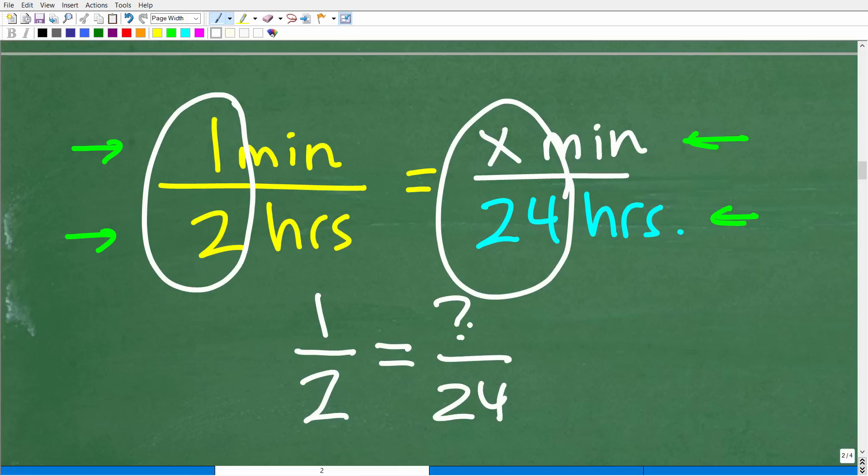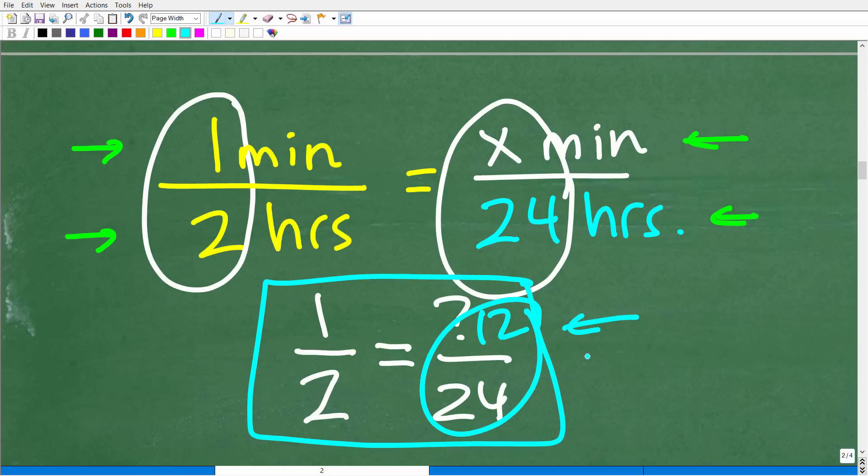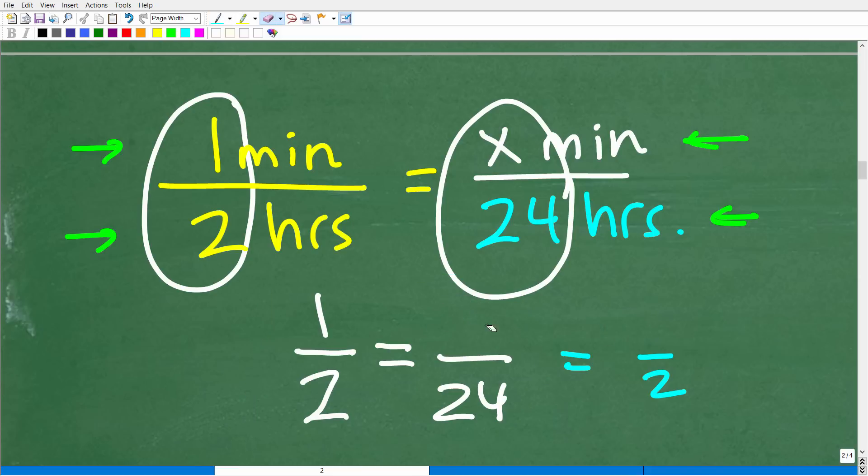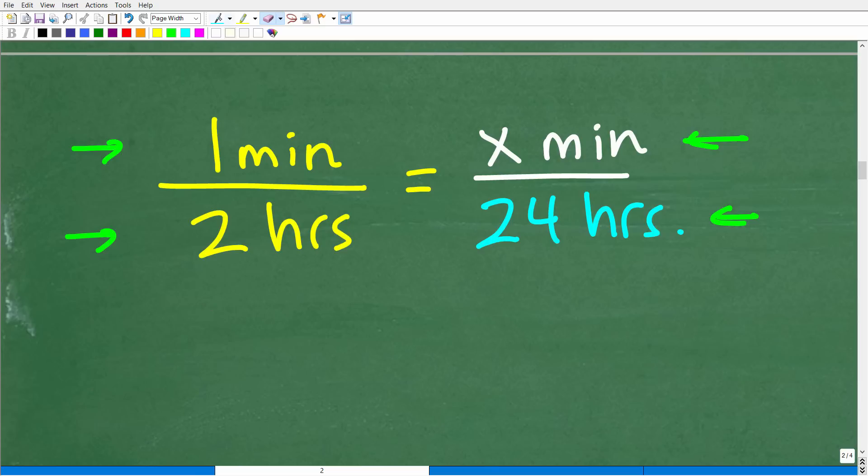I don't know how many minutes, so I'm going to use a variable. One half is equal to what over 24? I have x over 24, but x just represents a number. If I said, can you figure out what number goes right here? One half is equal to what over 24? Hopefully most of you are like, that's got to be 12 because 12 over 24, if we reduce that fraction, is one half. And that is fantastic because 12 is the right answer. We're going to lose 12 minutes in 24 hours.